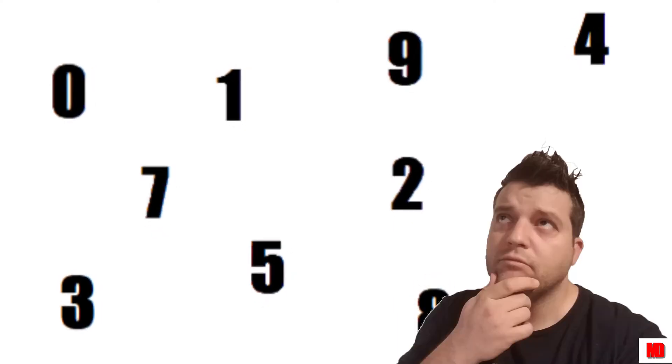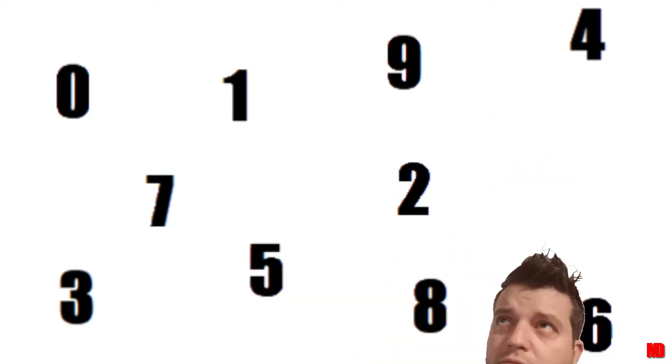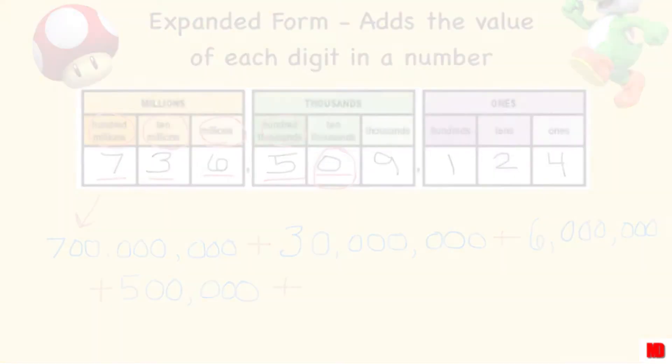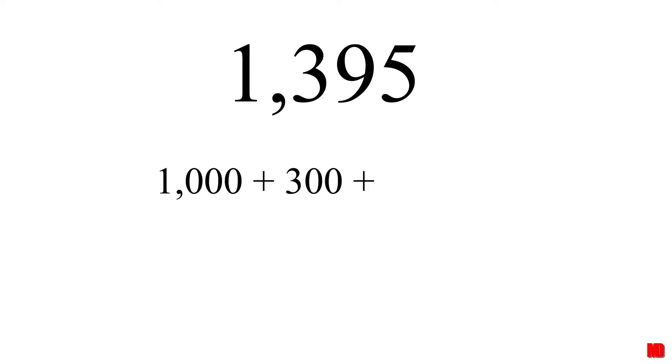Of course, you know this, but you may not be aware as to how this all works out. You may remember in elementary school writing numbers in expanded form, like 1,395 for example. In expanded form, this is 1,000 plus 300 plus 90 plus 5.